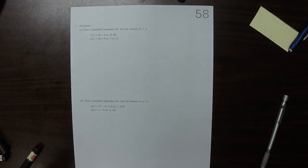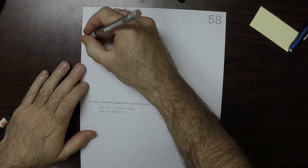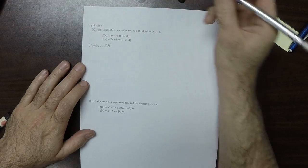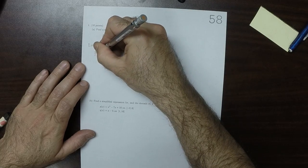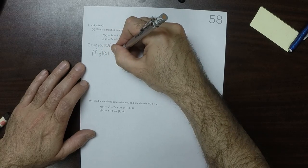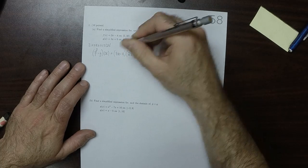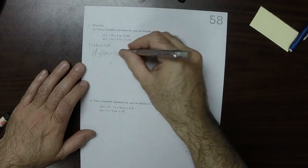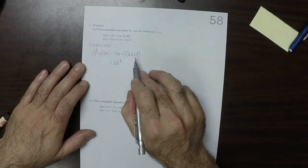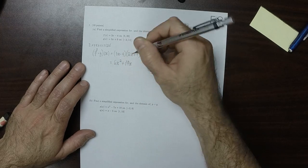This is the solution to homework 58. So as for the expression f product g evaluated at x, that's the product of these two functions. That'll be 6x squared plus 27x minus 8x, so that'll be plus 19x minus 36.